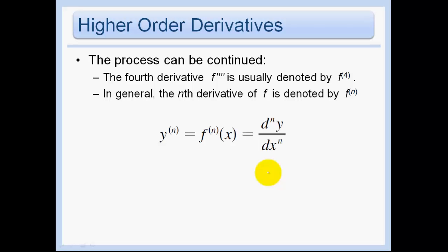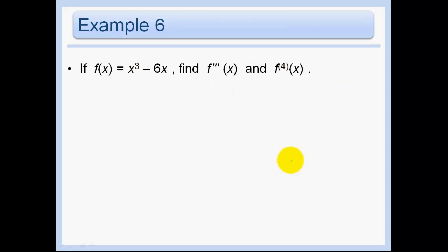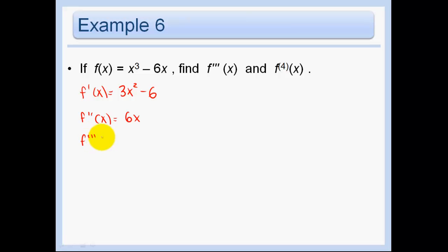Higher order derivatives — this is just really notation. We can keep going on and on. Usually we don't want to keep writing f prime prime prime prime, so we denote that with superscript notation, and any nth derivative as that. This is in Leibniz notation right here. So: f prime of x gives 3x squared minus 6; f prime prime is 6x; f triple prime is 6; and the fourth derivative is just 0.